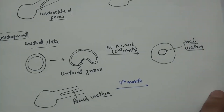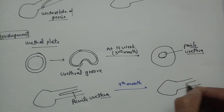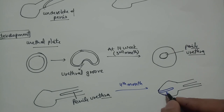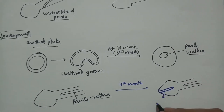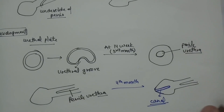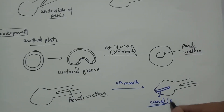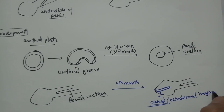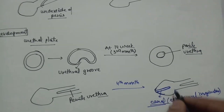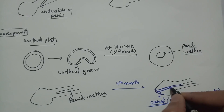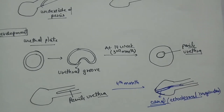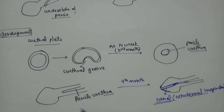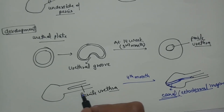During the fourth month, ectodermal cells of the glans penis invaginate and form a canal. This ectodermal invagination of the glans penis cells fuses with the penile urethra, the septum vanishes, and they form the complete urethra.